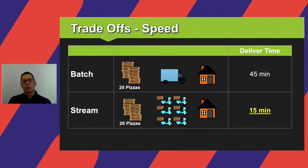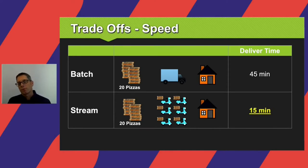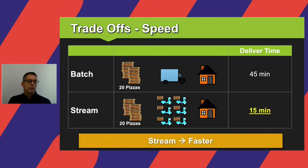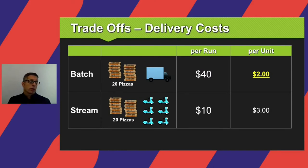Let's look at speed. If we have 20 pizzas to deliver and we use the pizza delivery truck, that will probably take longer — the truck needs to wait until all pizzas are ready, and driving through the city also takes longer. So total delivery time is 45 minutes. If we use the pizza delivery scooters, each one can pick up pizzas as they arrive and head off immediately, driving faster through the city. We expect a 15-minute delivery time, with pizzas arriving as they flow out of the oven. So in terms of speed, the stream option is faster. However, looking at cost, the pizza delivery truck costs $40 per run, but with 20 pizzas it delivers them all at once — so cost per unit is just $2.